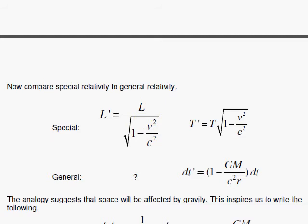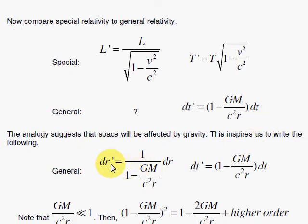So I'm going to set up the spatial distortion, dr prime, in terms of the dr, with this same factor in the denominator, just like I have here, the square root of 1 minus v squared in the denominator for the space.